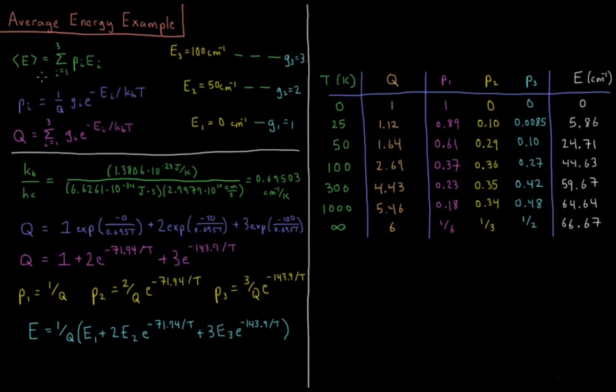So how are we going to calculate the average energy of this system? The average energy is equal to a sum over all the levels of their probability times the energy of that level. The probabilities is one over the partition function of their degeneracy times their Boltzmann factor, e to the minus energy divided by Boltzmann constant times temperature. And the partition function is the sum over all the levels of their degeneracies times the Boltzmann factor.